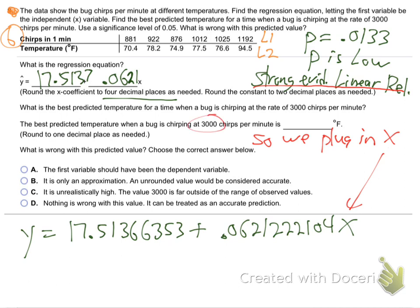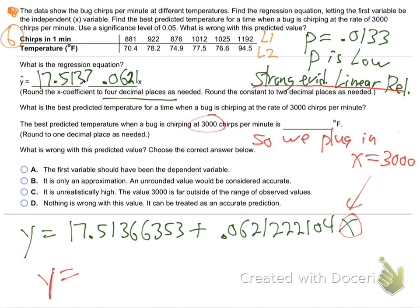I'm going to use all the accuracy: 17.51366353 plus 0.0621242104 times X. So remember, you've got to use all the decimal places when you're going to use it. There's strong evidence of a linear relationship, so we plug in X to the linear equation. The X is 3,000 chirps, so plug in X equals 3,000 right there and hit the buttons on your calculator.